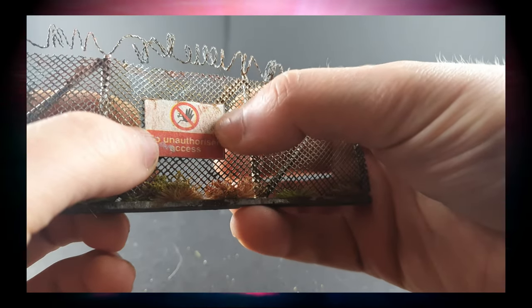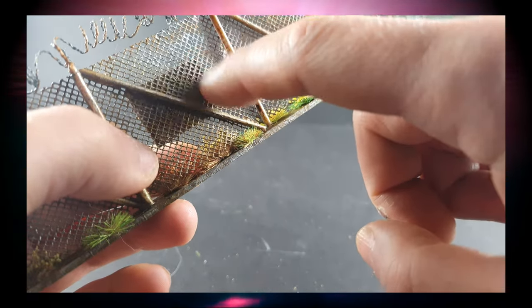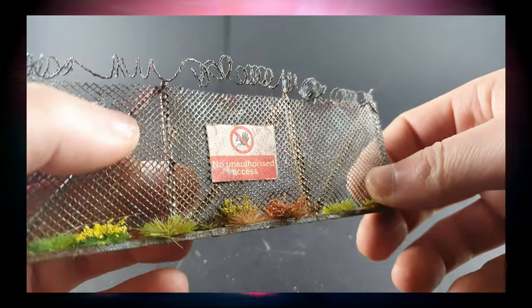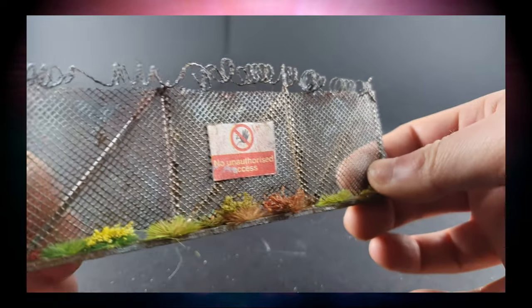And then of course we glued on the sign there, and the back of the sign is the same sort of color scheme, but you can't really see it through the chain link fencing. And the good thing about this mesh is that it takes paint very well.